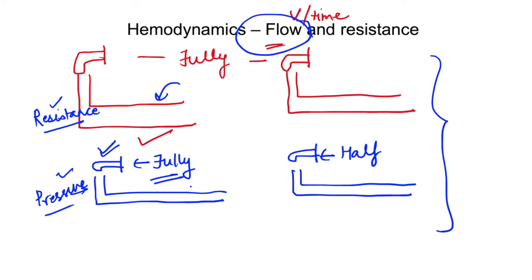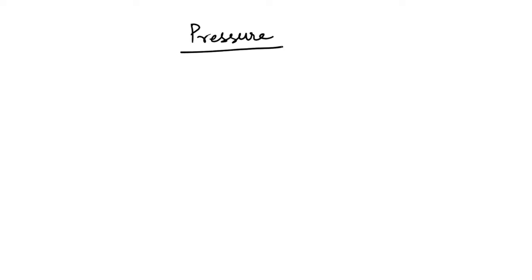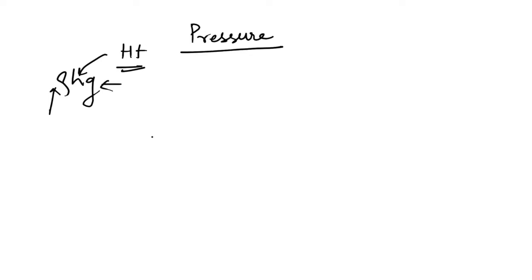Let us see in detail both aspects which determine flow. First, the effect of pressure on flow. What factors affect pressure — the push force for flow? Pressure is determined by ρhg, where ρ is the density of the fluid, g is gravity, and h is the height of the fluid column. For a given fluid on Earth, g and ρ are constant, so only height will change.